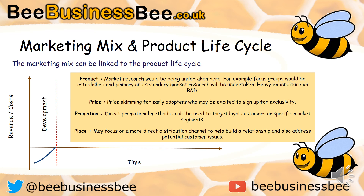For placement during the development phase, you might focus on a direct distribution channel. This helps build a relationship with the customer and gives you control over the experience, which links to the 'process' P mentioned earlier. It also gives you the ability to address any issues that arise and potentially run a sample target market. That is how you tie the marketing mix and the product lifecycle together — I've shown it here for the development phase, but you should apply the same approach to every single phase.